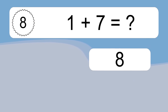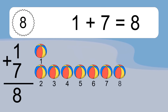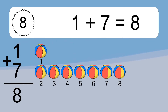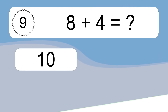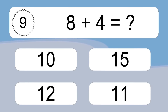1 plus 7 equals what? 1 plus 7 equals 8. Let's count it: 1, 2, 3, 4, 5, 6, 7, 8.